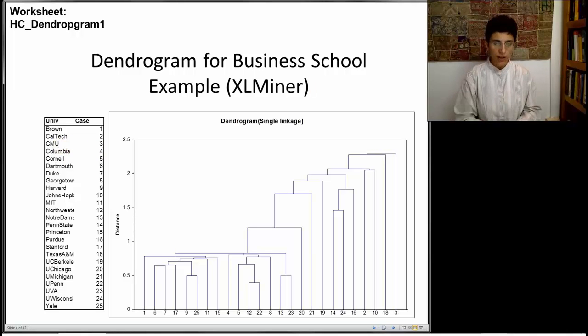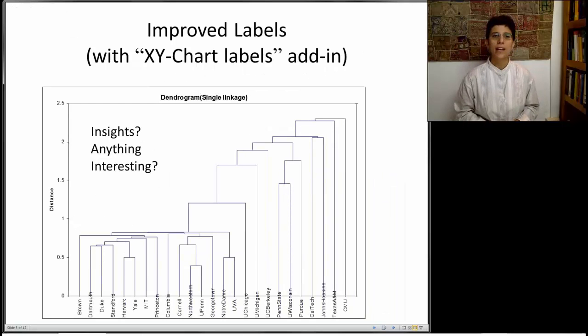To make things a little easier, and although when a very large data set exists it doesn't make any sense to put real labels on the x-axis, if you have a small data set, you can use something called a free XY chart labels. It's a small add-in to Excel that you can download, and we have a link on our website. What I did now is I simply replaced the numbers that we had on the x-axis with the names of the universities. Now it's a little easier to see which universities get clustered early. For example, we can see that Northwestern and University of Pennsylvania got clustered first.